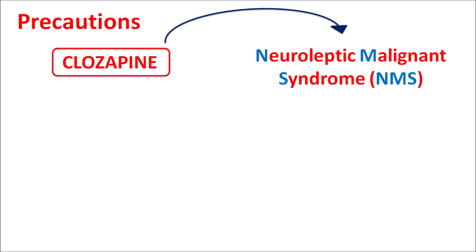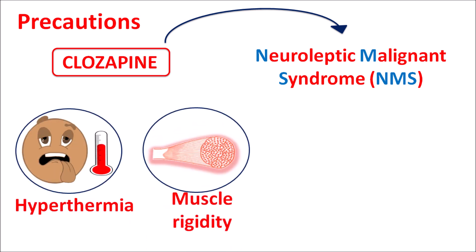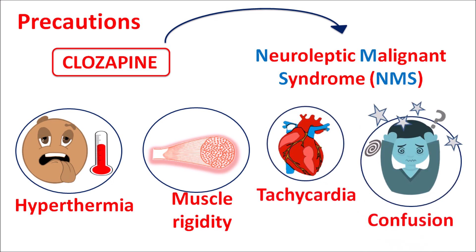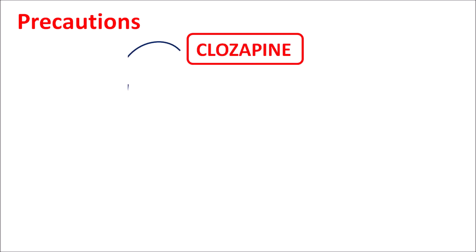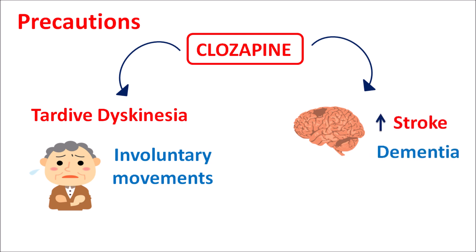This drug can produce neuroleptic malignant syndrome (NMS), which is commonly observed with many antipsychotics. Symptoms include hyperthermia, muscle rigidity, tachycardia, and confusion. Clozapine can also produce tardive dyskinesia — an irreversible muscle spasm — though it is less pronounced compared with typical antipsychotics. Any development of involuntary movements and muscle spasms should be thoroughly monitored. On long-term use, this drug can affect the CNS, increase cerebrovascular diseases, and may precipitate stroke and dementia, so it should be carefully used in elderly patients.